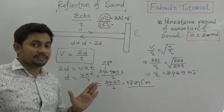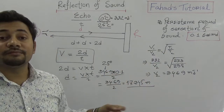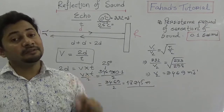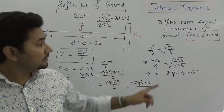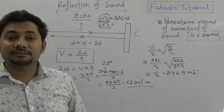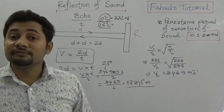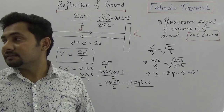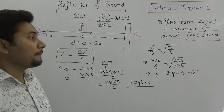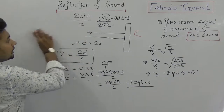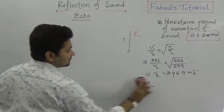So this is how we find the velocity of sound at different temperatures, and these equations are very important for solving mathematical problems in this chapter. The temperature is always given, so the velocity will vary accordingly when finding other values. I hope you now understand the reflection of sound.